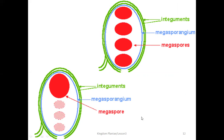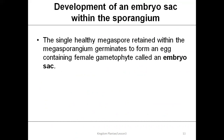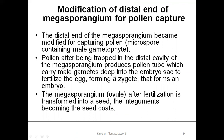The single healthy megaspore retained inside the megasporangium germinates to form an egg — the ovule containing the female gametophyte, which is the embryo sac. The distal end of the megasporangium became modified for capturing the pollen grain. The pollen grain is the microspore containing the male gametophyte. After being trapped in the distal cavity, the pollen produces a pollen tube which carries the male gametes deep into the embryo sac to fertilize the egg, forming the zygote that will later become the embryo.